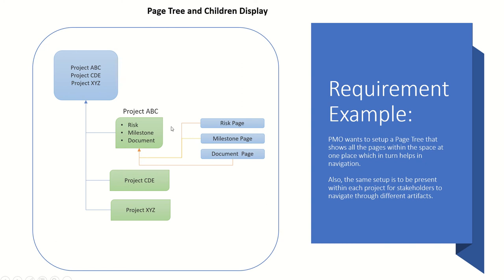Similarly, Project ABC has different artifacts stored in its child pages. We want to create a table of content with links to these pages at the parent page. We will have a root page under which the entire structure has been set up, and it will have links to all of these pages.